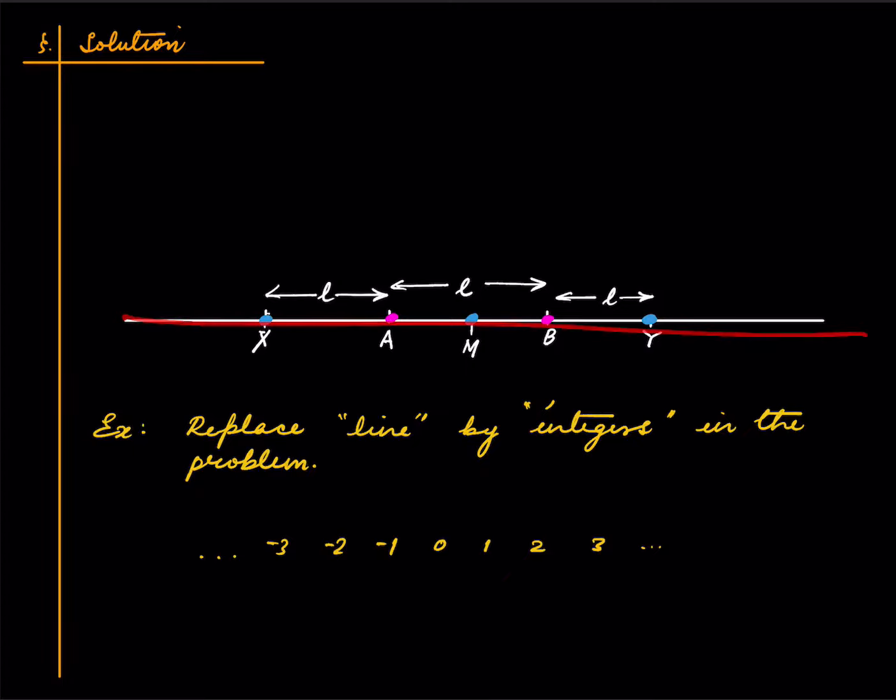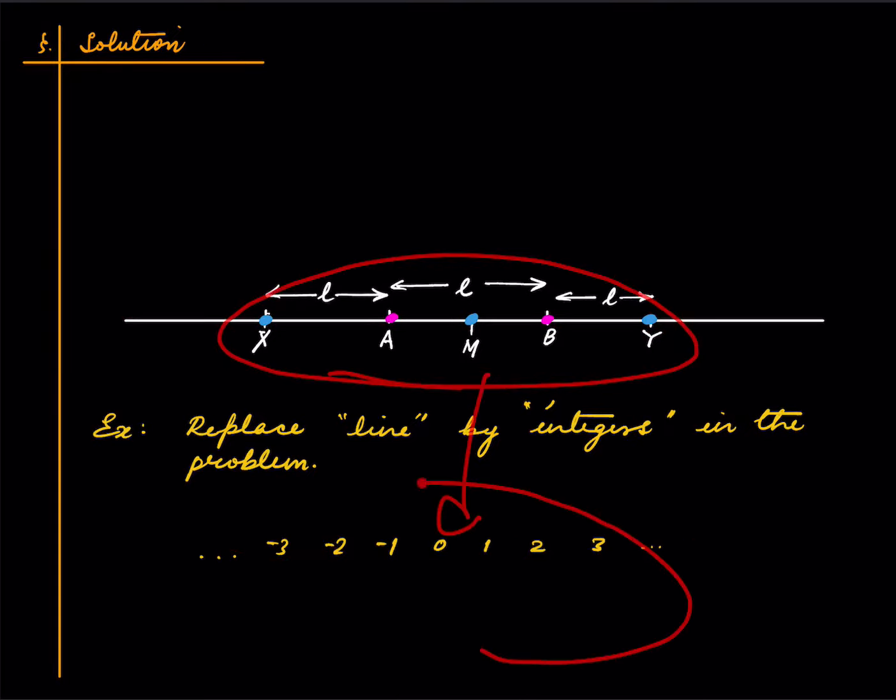So instead of coloring a continuum, we are coloring the set of integers. It's the same reasoning that you can export here with a little bit more care, because you can't just start with, let's say, the points 1 and 2 and talk about the midpoint because the midpoint is not an integer.